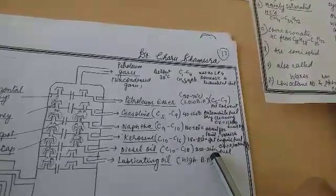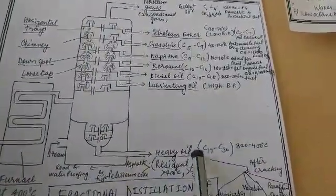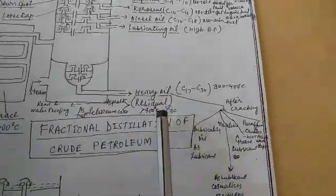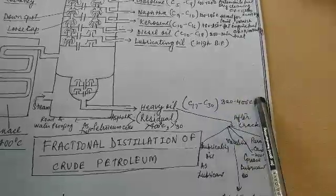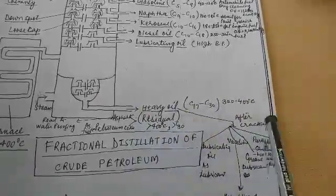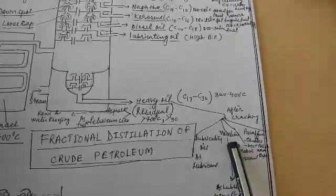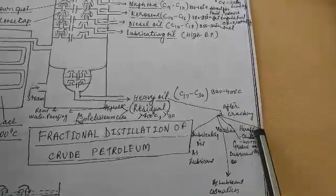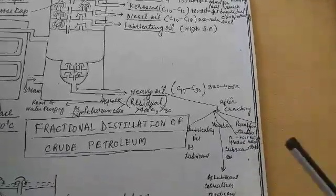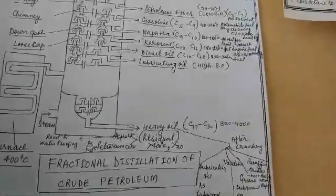Lubricating oil is a high-boiling fraction used as a lubricant. Some fractions that do not volatilize are collected at the bottom of the fractionating tower — these are the heavy oil and the residue. Heavy oil contains carbon 17 to carbon 30, collected at 320 to 400 degrees centigrade. After cracking, heavy oil produces lubricating oil, vaseline (used in cosmetics and medicines), grease (a semi-solid lubricant), and paraffin wax, used for candle making, wood polish, wax paper, and soap paper.